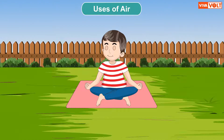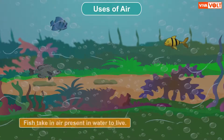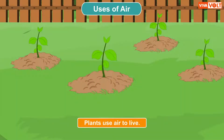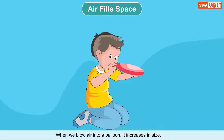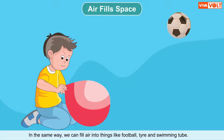Humans need air to breathe. Fish take in air present in water to live. Plants use air to live. Air fills space. When we blow air into a balloon, it increases in size. This happens because air fills the space inside the balloon and gives it shape. In the same way, we can fill air into things like football, tire and swimming tube.